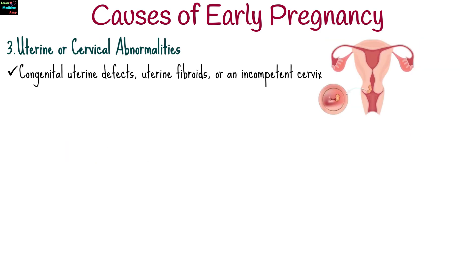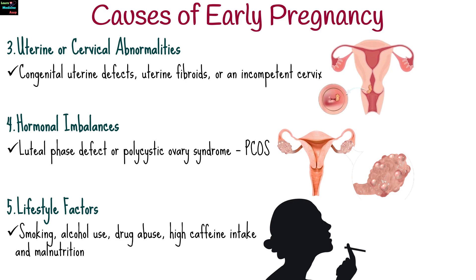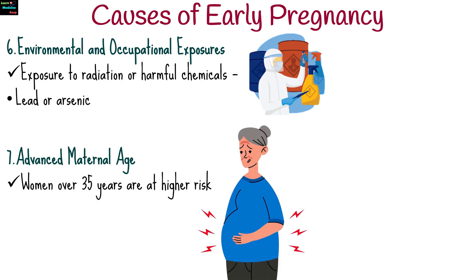Congenital uterine defects, uterine fibroids, or an incompetent cervix can interfere with pregnancy viability. Conditions like luteal phase defect or polycystic ovary syndrome may also contribute. Lifestyle factors such as smoking, alcohol use, drug abuse, high caffeine intake, and malnutrition are known risk factors, as is exposure to radiation or harmful chemicals such as lead or arsenic. Women over 35 years are at higher risk due to an increased chance of chromosomal issues.